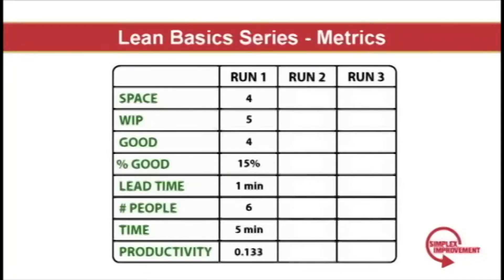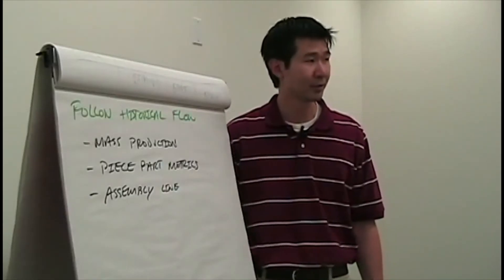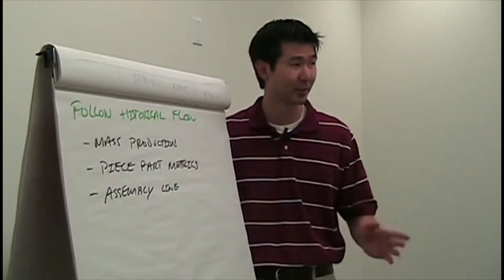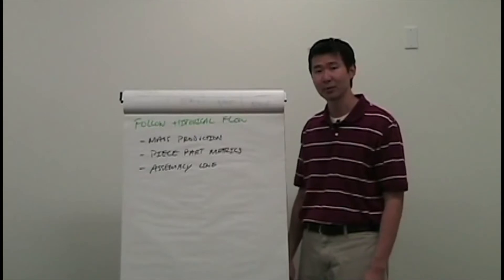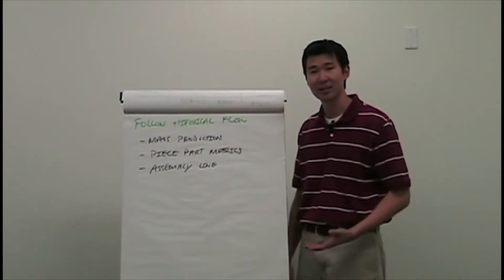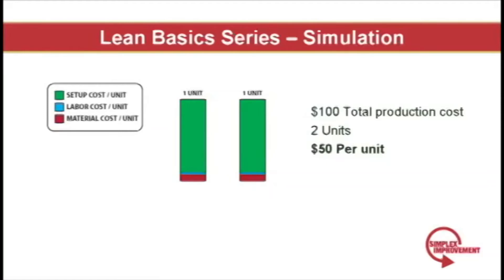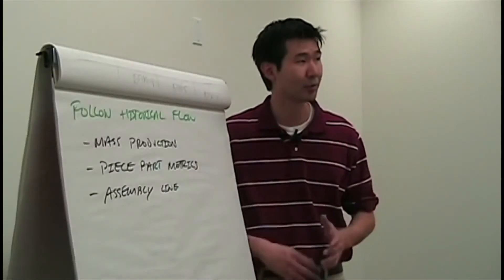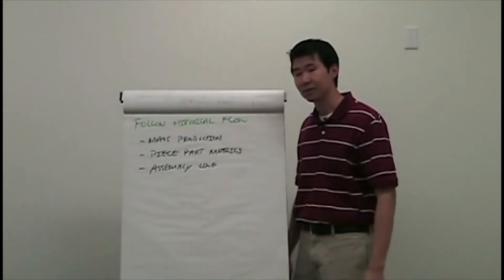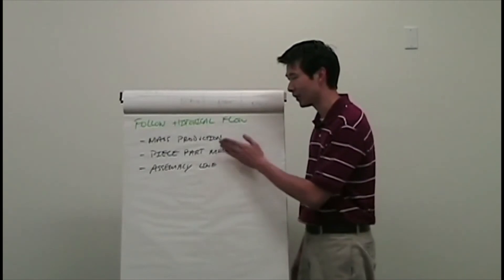Not necessarily a bad start considering craft mentality, but productivity was horrendous. Let's continue our historical flow through mass production. Henry Ford was the father of mass production, and it is a huge step forward from craft production. One downfall with mass production is piece part metrics — workers are incentivized to produce a lot, driving down cost of production. If two items cost $100 to produce, that's $50 per item. If that same cost is spread over 100 units, each item only costs $1. Piece part metrics incentivize workers to produce more than needed, which is overproduction — a form of waste. As a final step in the simulation, we're going to organize into an assembly line.